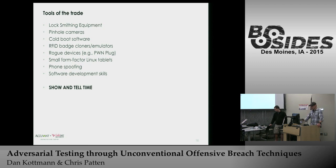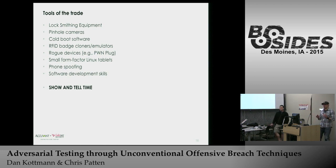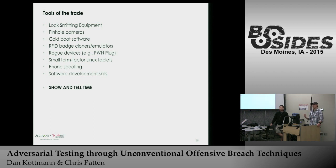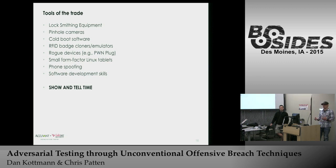We also use cold boot software — like Kon-Boot. Once we gain physical access to a system, Kon-Boot will actually rewrite or patch the authentication process so we can log in as local admin without a password. That allows us to drop a shell and establish a persistent connection. The whole idea is to establish the initial foothold and get out of the building quickly — if you stay too long, you're going to get caught.